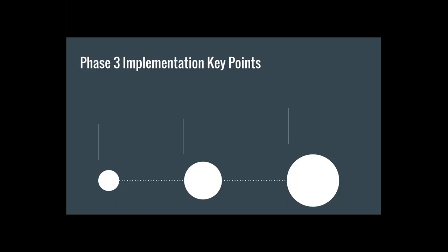So this phase three that we're in — coming up next week — as far as the implementation goes, at 530Z and 1730Z this is region-wide. We're no longer going to have the staggered approach where eastern offices would initialize at one time and the rest of the region at another. That's gone. We're all going at 530Z and 1730Z with what the super blend has, and that's going to cover period two through day seven.